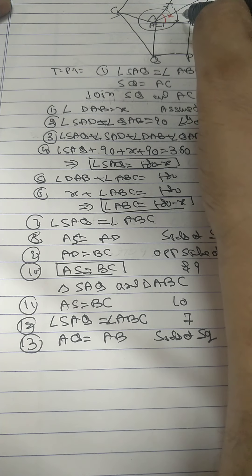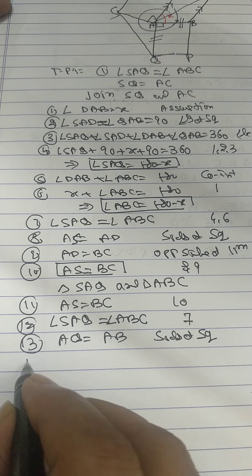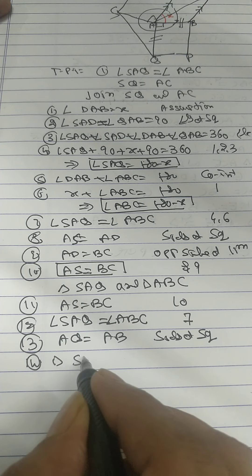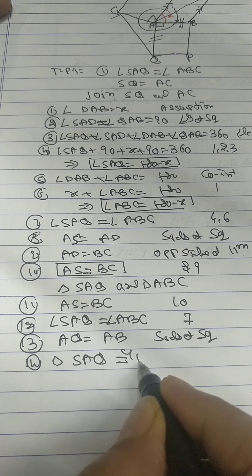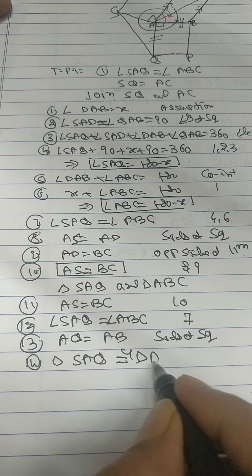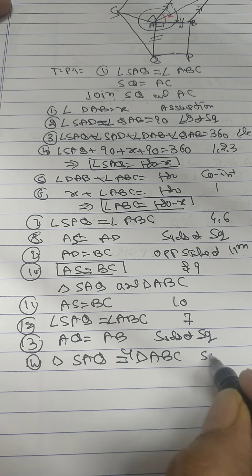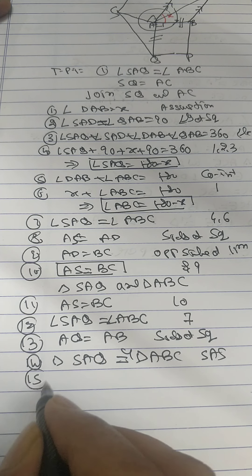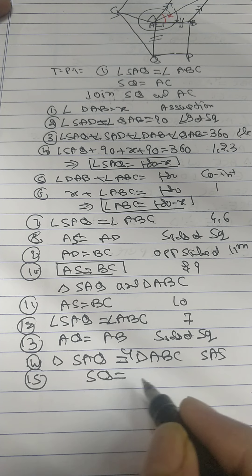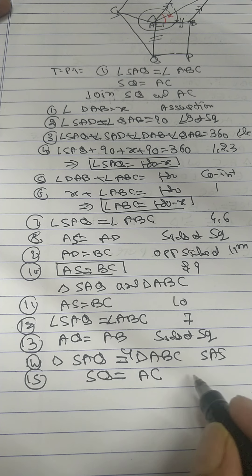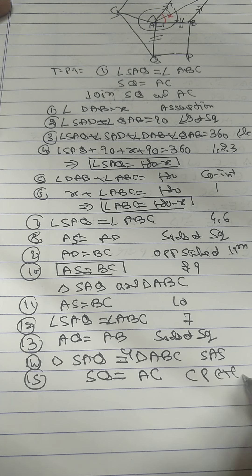Therefore triangle SAQ congruent ABC by SAS. Therefore SQ equal AC, CPCT.